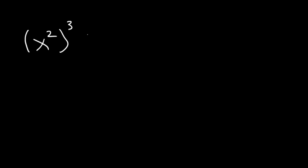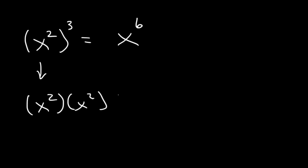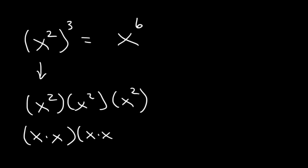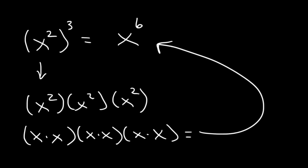Now what is x squared raised to the third power? When you raise one exponent to another exponent, you need to multiply. 2 times 3 is 6. So this expression means x squared times x squared, three times. Each x squared is x times x, so in total you're multiplying six x variables — and that's why it equals x to the sixth.